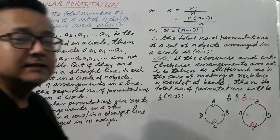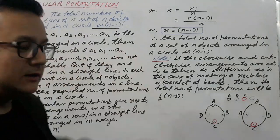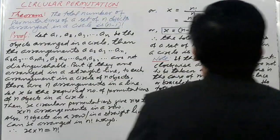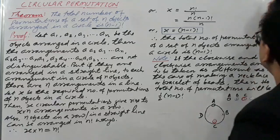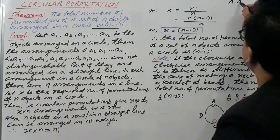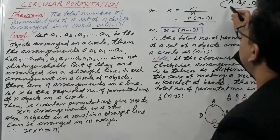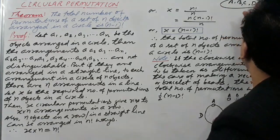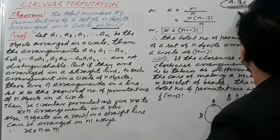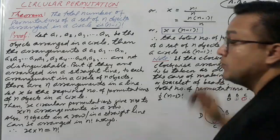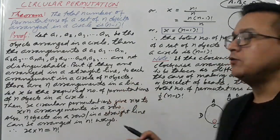I will firstly explain with one example, then we will go through this theorem. Suppose we have A, B, C, D — four objects.